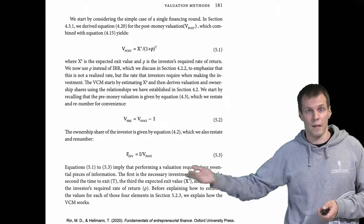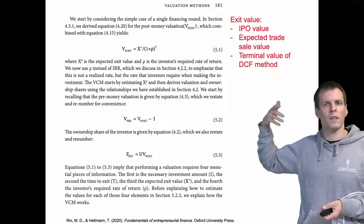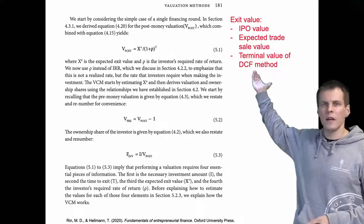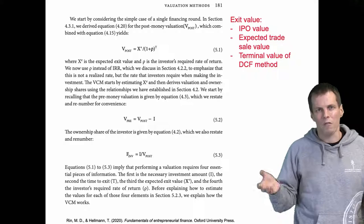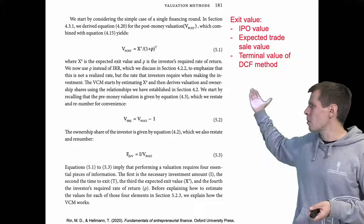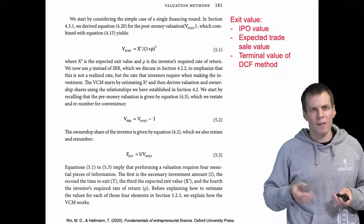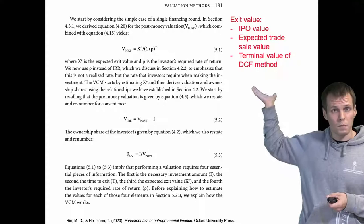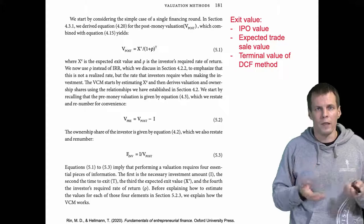The exit value is typically calculated based on IPO value — how much the company would be worth on the stock market if listed. Alternatively, if selling to a strategic acquirer like Google or Microsoft, you estimate how much they would pay. You can also apply a terminal value discounted cash flow method for scenarios where the current owners might buy out the venture capitalist. These three techniques are used to calculate the exit value in the venture capital method.